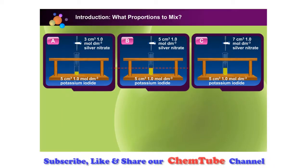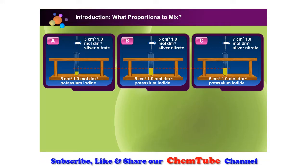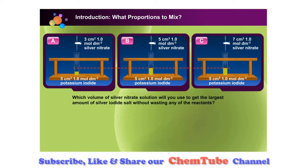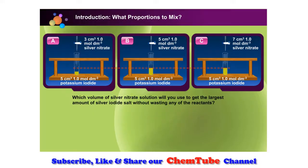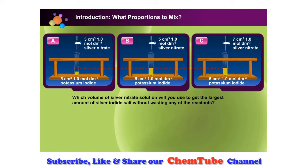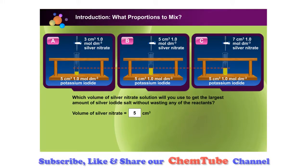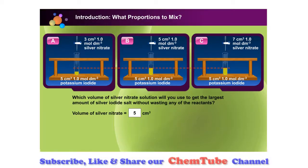Study the height of the precipitate formed in A, B, and C. Which volume of silver nitrate solution should you use to get the largest amount of silver iodide salt without wasting any of the reactants? 5 cubic centimeters of silver nitrate is the correct volume to use.